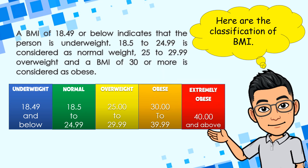Now, how do we classify the BMI? Here are the classifications of BMI: A BMI of 18.49 or below indicates that the person is underweight. 18.5 to 24.99 is considered normal weight. 25 to 29.99 is overweight. And a BMI of 30 or more is considered obese or extremely obese. Look at the graph below.